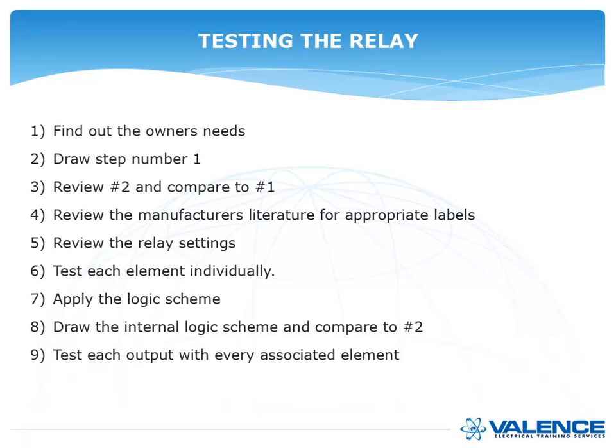When testing a relay, find out what the owner needs — for example, 'I want this relay to trip whenever output one operates.' Then draw it out and compare that drawing to the owner's needs. Review the manufacturer's literature for the appropriate labels. If you're testing a Schweitzer relay and looking for an inverse overcurrent, you're looking for something labeled 51. If it's phase, it'll be 51P. If you want the time delay, it should be 51PT. If it's a GE relay, you're looking for a P in the front for phase, then TOC for inverse — so PTOC1, for example, maybe with a T at the end.